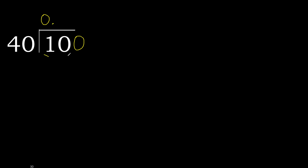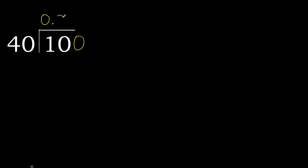Here: 0 point. 100 is not less, therefore with 100. 40 multiply by which number is nearest to 100 but not greater? 40 multiply by 3 is greater. Multiply by 2: 80 is not greater. Subtract: 20.